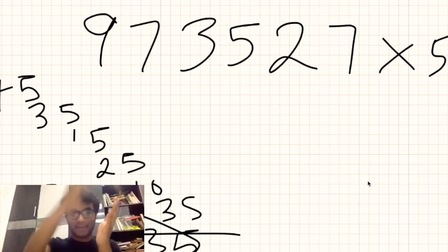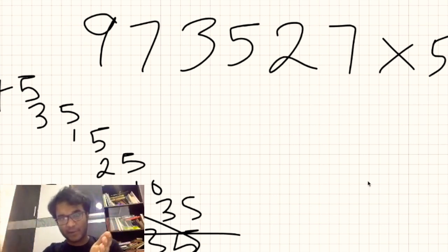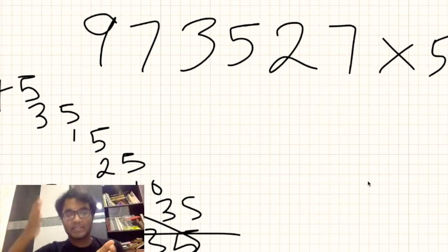And how do I do it in my brain? 45, 35, 485. 485, 15, 4865. 486, 5, 25, 488. 486, 5, 5, 10, 486, 7, 6, 0. 486, 7, 6, 35. 486, 7, 6, 35.